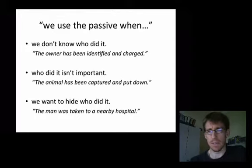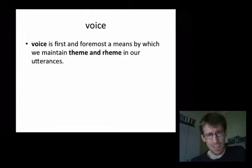Take any of those examples of the passive and test them against any of those three explanations for the passive. And you won't find a fair, reasonable example. We don't know who did it. The animal has been captured and put down. Yes, we do. The authorities. We want to hide who did it. The owner has been identified and charged. Why would we want to hide the police? We want to hide who did it. The animal has been captured and put down. Why would we want to disguise the fact that the RSPCA or the police have done their job? We want to hide who did it. The owner has been identified and charged. We have a secret police, do we? No, I don't think so. The thing just doesn't wash.